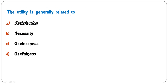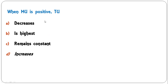Next question: 'Utility is generally related to' — satisfaction, necessity, usefulness, or uselessness? The correct answer is A: satisfaction. Utility is generally related to satisfaction. Next: 'When marginal utility is positive, total utility' — decreases, is highest, remains constant, or increases? The correct answer is D: when marginal utility is positive, the total utility increases.